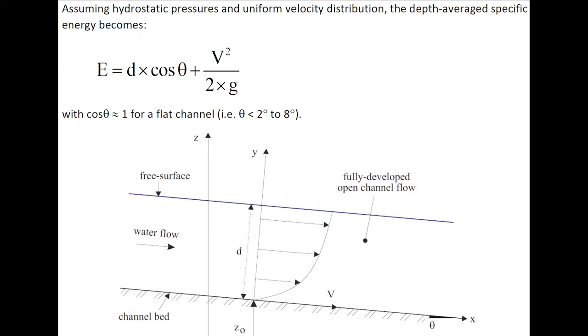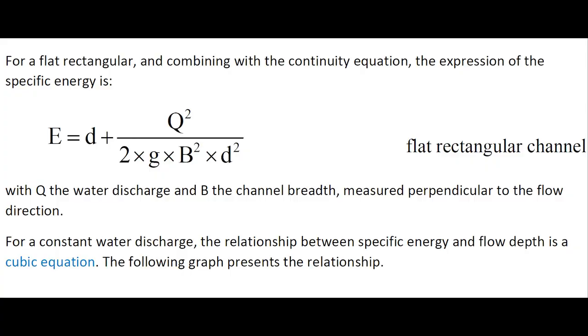Assuming hydrostatic pressure and uniform velocity distribution, the depth at very large specific energy is d cos theta plus V squared over 2g, with cos theta being close to or equal to unity for a flat channel less than 2 to 8 degrees within 0.1% to 1%.